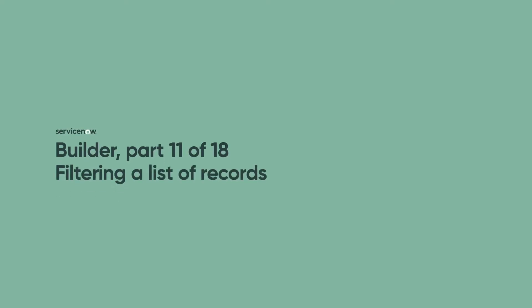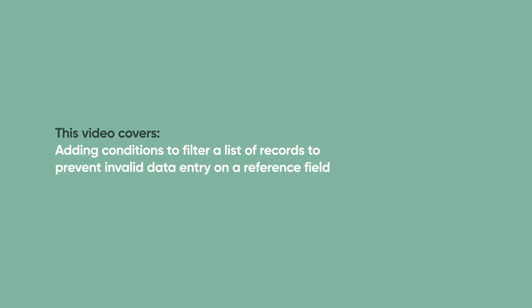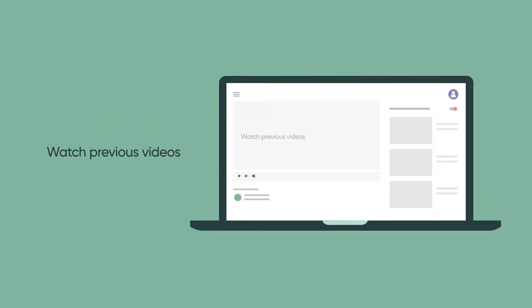Welcome to Part 11 of the Builder Series. In this video, we'll demonstrate how to add conditions to filter a list of records to prevent invalid data entry on a reference field. If you haven't already seen the previous videos in this series, it's a good idea to watch them to get the most out of this one, which continues with the Safety App we built earlier.